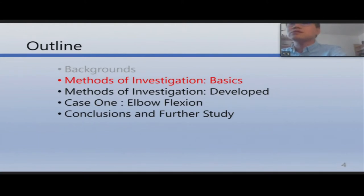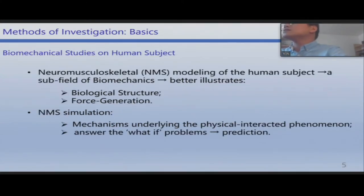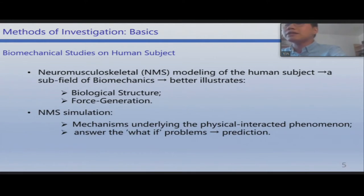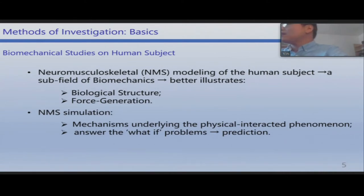Next I will introduce my method of investigation and give some basic technologies about our approach. The first technology is biomechanical studies using neuromusculoskeletal modeling of the human subject. This is a subfield of biomechanics that better illustrates biological structures. Unlike general multi-body structures, this method can describe muscle activities in simulations. The second technology is simulation, which can describe the mechanics underlying physical phenomena and also achieve predictions for what-if problems.